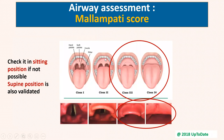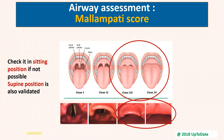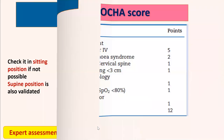The Mallampati score should ideally be done in the sitting position, or in the supine position if not possible. If the patient is Mallampati grade three or four, expect difficulty. Grade three means you can see only part of the uvula; grade four means you cannot see the uvula at all — only the hard palate. By laryngoscopy, grade three shows only the epiglottis and grade four shows only the palate. Again, assessment should be by an expert operator.